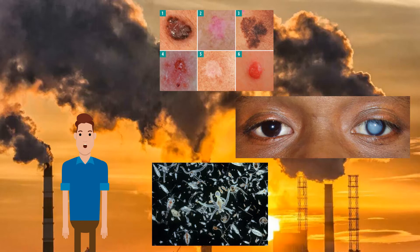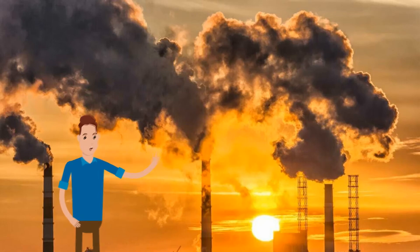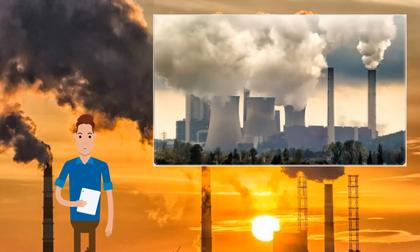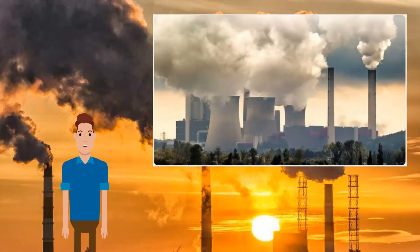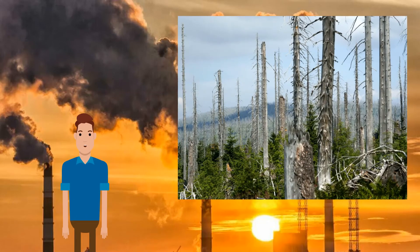There is an international agreement to reduce the production of CFCs, but the reduction will take a very long time to take effect. Power stations and oil refineries release sulfur dioxide and nitrogen oxides into the atmosphere. These gases react with water in the atmosphere to produce acid rain. Forest soils, lakes, rivers and buildings in Scandinavia have been badly affected by acid rain produced in the UK and Germany. International cooperation is required to reduce this effect.